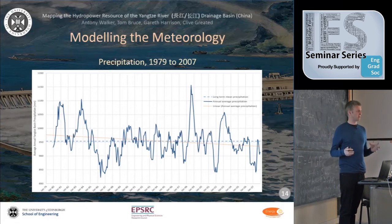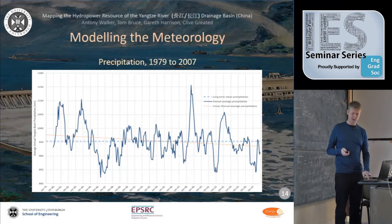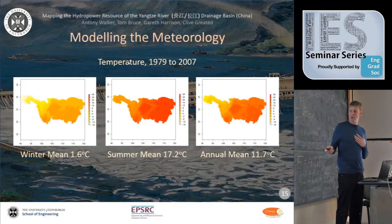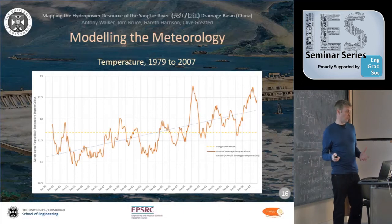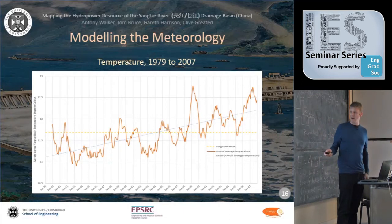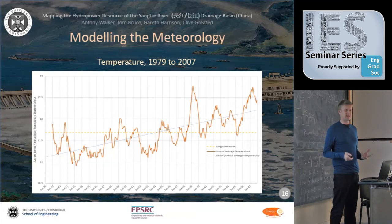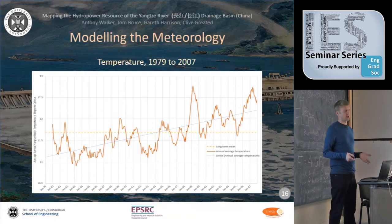There may be regional changes due to climate change, but as a whole there's no significant trend. For temperature, winters are cold — particularly on the plateau, with a mean of 1.6°C over the 30-year record — while summers are hot, particularly in the middle region and eastern edge, averaging 11.7°C. Over 30 years there's a significant upward shift in temperature, which could affect snowmelt, summer and winter flows, and increase evapotranspiration — all potentially impacting long-term hydropower resource.